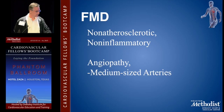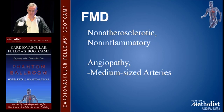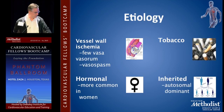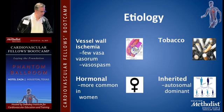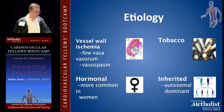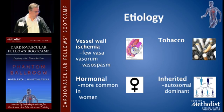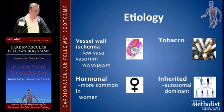Fibromuscular dysplasia, in essence, is a non-atherosclerotic, non-inflammatory angiopathy involving the medium-sized arteries. Multiple possible etiologies include vessel wall ischemia, and histologically there may be few vasa vasorum within the vessels. External influences include tobacco and hormonal factors — it's much more common in women. It may be autosomal dominant, and about 10% of patients will have a family member with fibromuscular dysplasia.